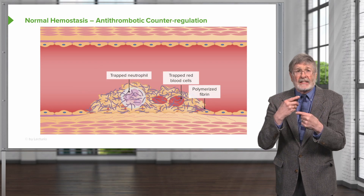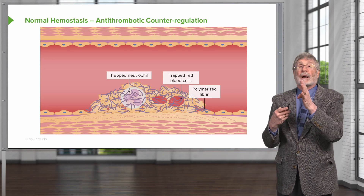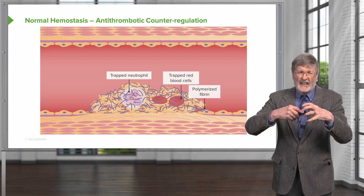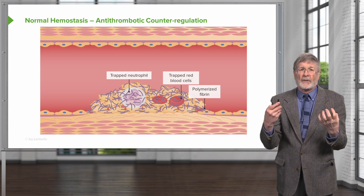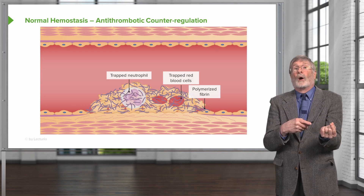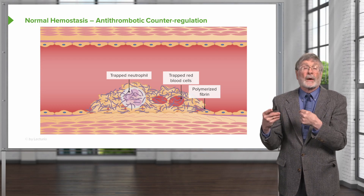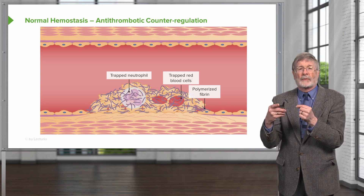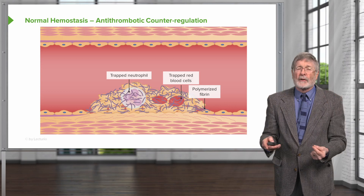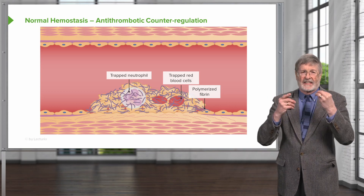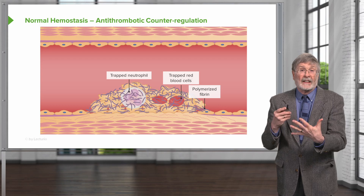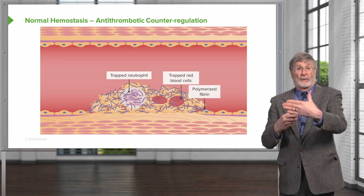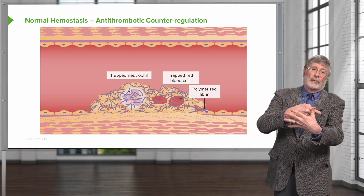Even as this process is ongoing, we are trapping other inflammatory cells — red cells and neutrophils — in this growing hemostatic plug. Those neutrophils will also start part of the antithrombotic counterregulation; they will release proteases that can begin to break down the thrombus. This illustrates one of the universal truths of biology: for every positive thing such as thrombosis, we have a negative counterpart — antithrombosis.